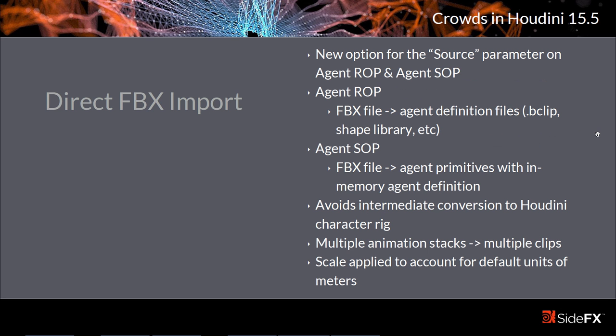The primary advantage is just the convenience of not having to do that intermediate step. But there are a few small differences in behavior. Because you avoid that intermediate conversion of the FBX file to a Houdini character rig, it can be a slightly more robust way of importing animation data because you don't have to worry about translating things like constraints into their equivalent as object nodes in Houdini. If there are multiple animation stacks or takes in the FBX file, those will be translated into multiple clips for the agent. Also, the direct FBX import applies a scale to account for Houdini's default units being meters, so the agent will be at a reasonable scale for good ragdoll behavior.